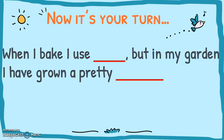Now it's your turn. Here's a sentence: 'When I bake, I use blank, but in my garden, I have grown a pretty blank.' Which word goes in which spot? Pause the video and write it down.